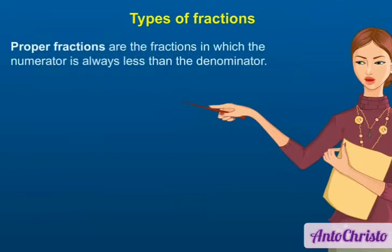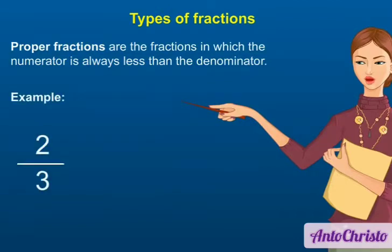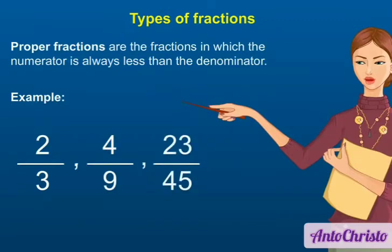Proper fractions are the fractions in which the numerator is always less than the denominator. All the proper fractions lie on the left hand side of 1 on the number line. Examples: 2/3, 4/9, and 23/45 are proper fractions.